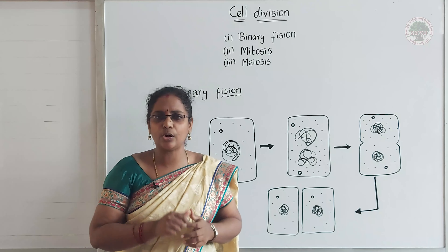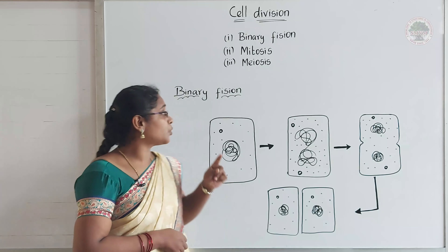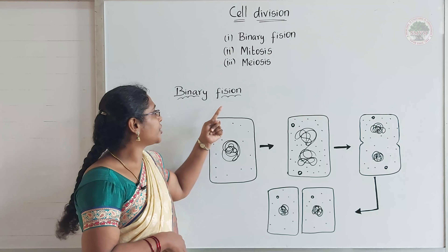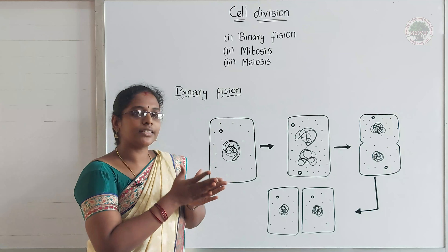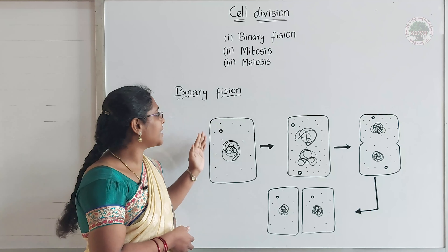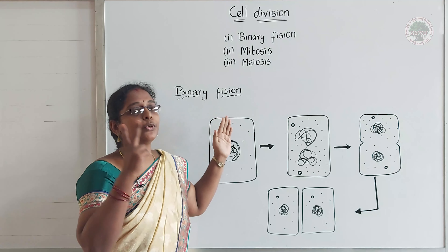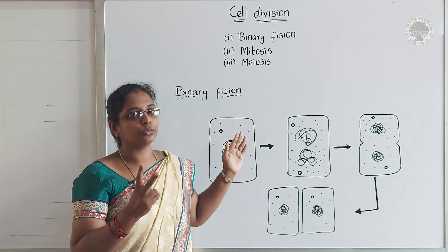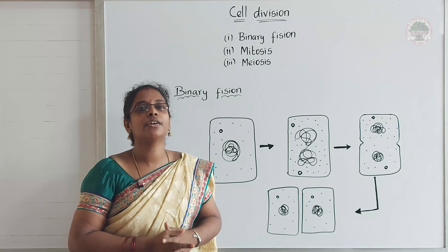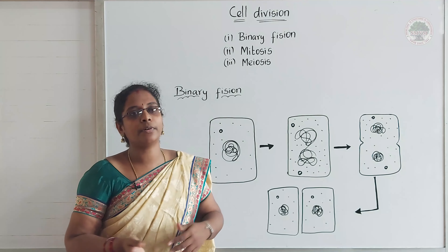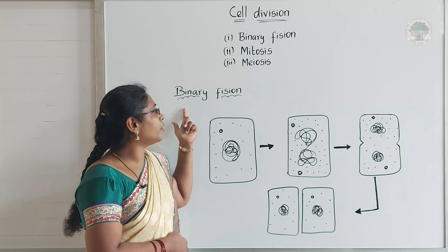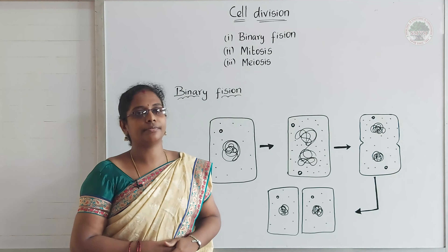First we need to know the meaning of binary fission. 'Bi' means two, and 'fission' means dividing. So one cell just divides into two — two equal, same kind of cells are formed because of this process. That is why the name of the process is binary fission.